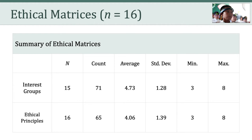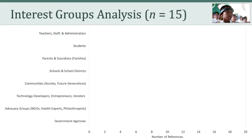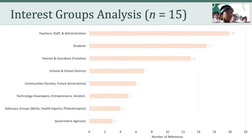In total, 65 principles were specified across all 16 matrices. This averaged out to just over 4 principles per matrix, with a minimum of 3 and a maximum of 8. From there, I wanted to try and categorize all of the interest groups by combining and collapsing them into meaningful categories. This resulted in 8 different interest group categories, which you can see listed here.